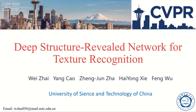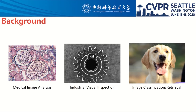Hello, I'm Wei-Jai. Today, I'm going to talk about our paper, Deep Structure Reviewed Network for Texture Recognition. As texture is the fundamental micro-structure of natural images and a proactive human visual cue for perceiving natural things, it serves as a significant mid-level feature representation for a wide variety of applications.